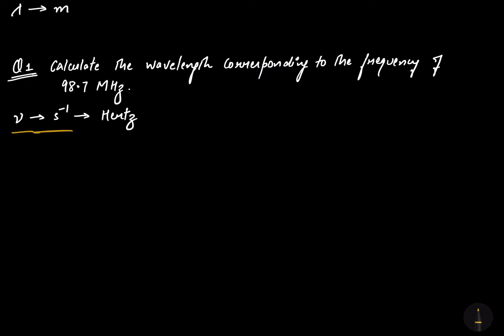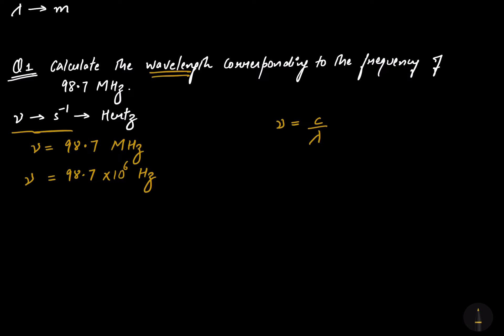The frequency is given as 98.7 megahertz. We convert megahertz to hertz: it comes out to be 98.7 × 10⁶ hertz. The question asks us to calculate the wavelength. Using nu = C / lambda, we rearrange to get lambda = C / nu.